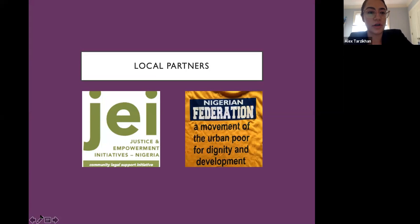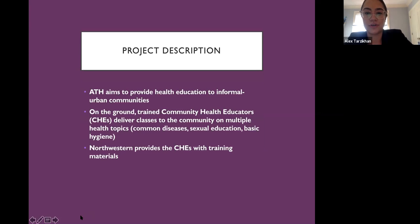For our Access to Health project in Nigeria, we're working with the Justice Empowerment Initiative (JEI), a civil society organization working in Nigerian urban informal settlements, and the Nigerian Slum and Informal Settlement Federation. The partnership has centered on community health education. Our objective was to develop a curriculum responsive to the needs of informal urban communities. We train community health educators—lay community members trained in providing peer-led health information discussions—on topics including common diseases, sexual education, and basic hygiene.